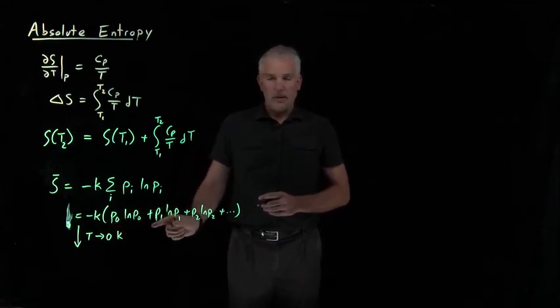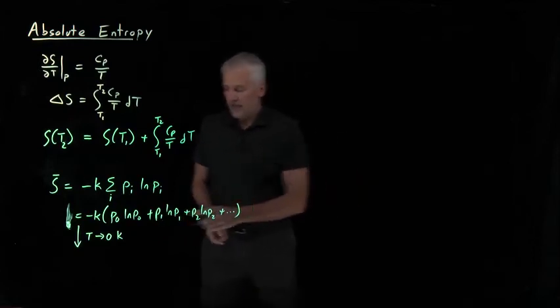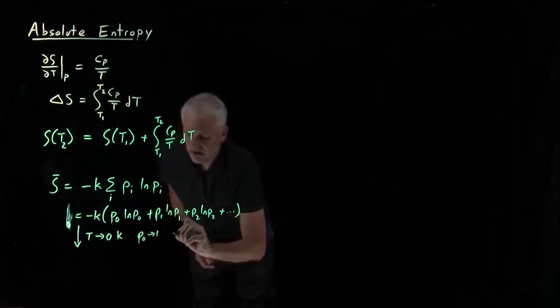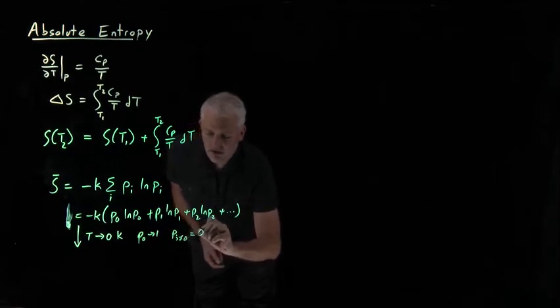There's going to be none of the molecules, zero percent of the molecules in any of the excited states. So at zero Kelvin, probability in the ground state is going to approach one. Probability in all the other states, as long as it's not the ground state, those are going to approach zero.